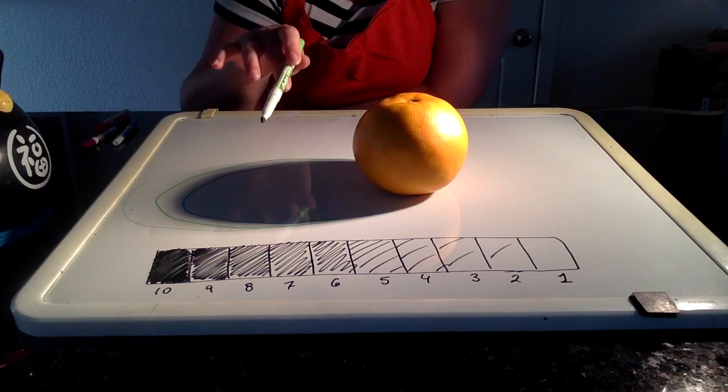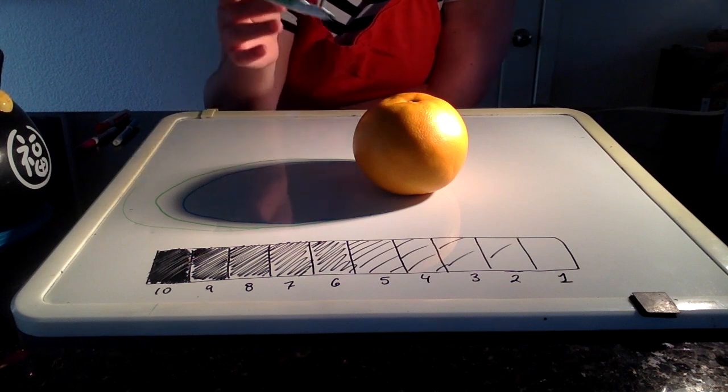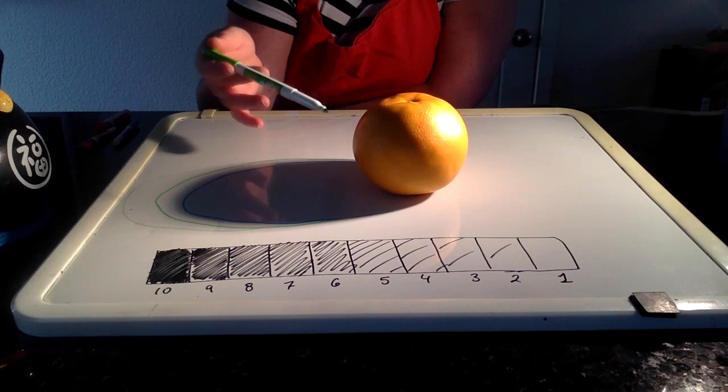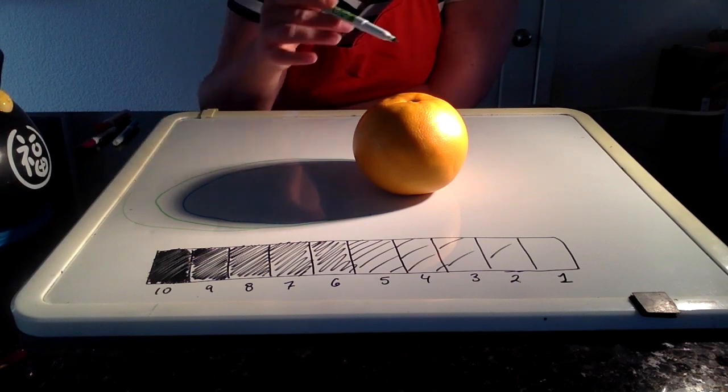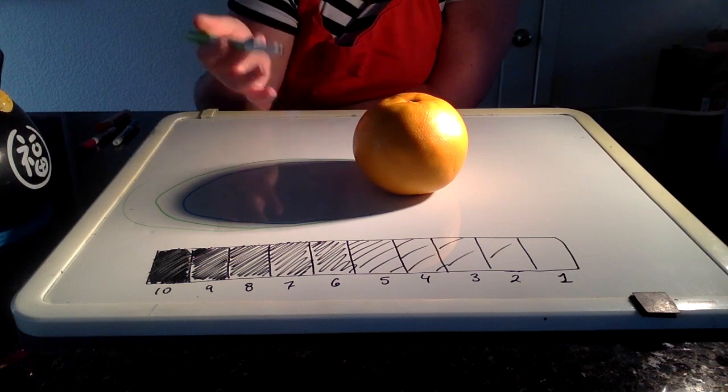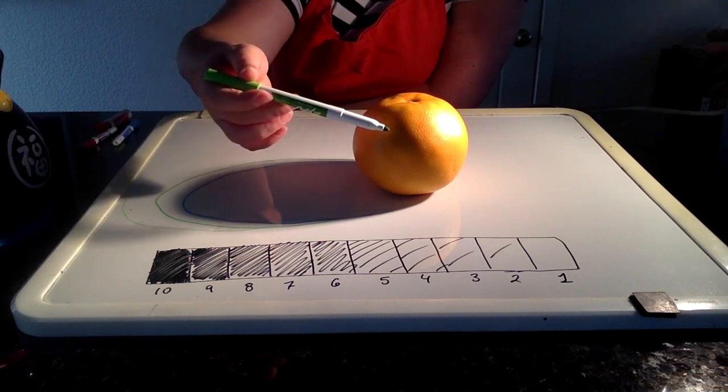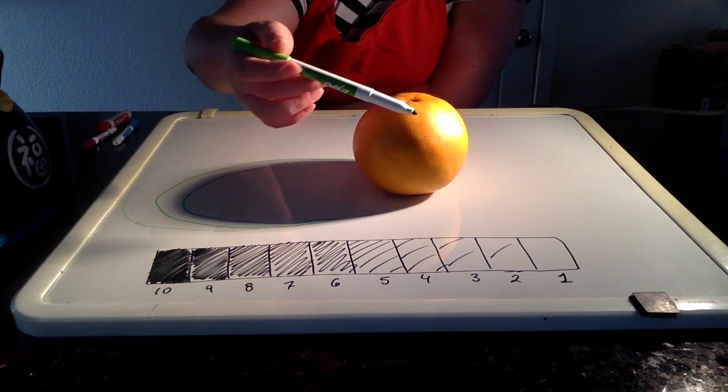The reason this is important to observe, guys, is that when you're drawing this, your circle is going to look round, but what makes it look like it's 3-dimensional is how you can observe and dissect your shadows and your highlights.